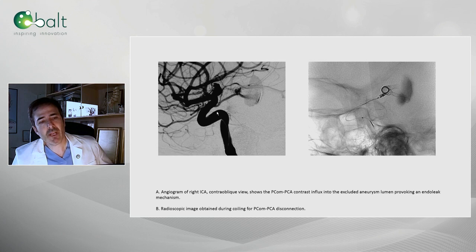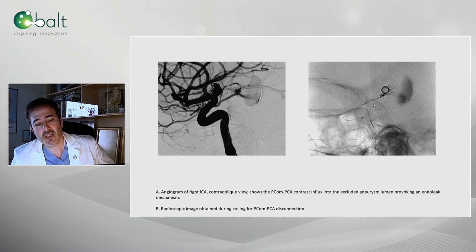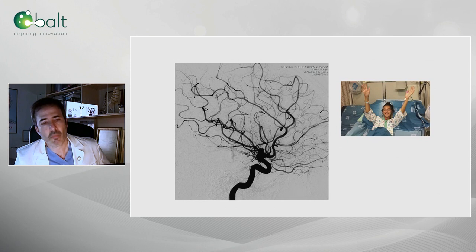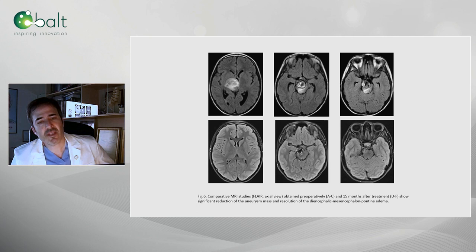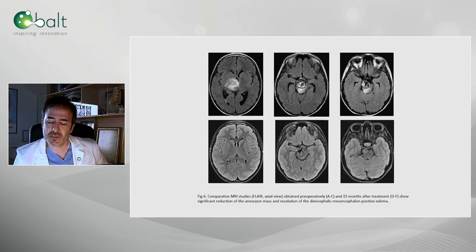Then we go through the carotid. You see the PCOM-PCA influx into the already excluded aneurysm lumen, provoking an endo leak mechanism that we treat by doing this connection of this PCOM-PCA. This is the immediate post. This is the MRI obtained before the intervention and after 15 months of the intervention. This treatment can only be done with these new micro flow diverters.